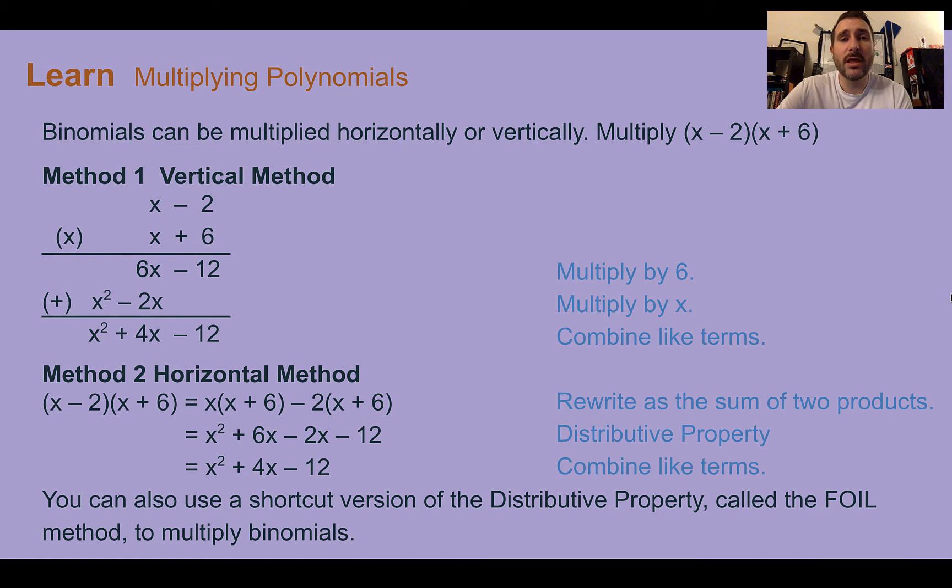Binomials can be multiplied in a few different ways. First, there is the vertical method. This particular method looks exactly like you probably learned multiplication in elementary school. You're going to line up the two things. Notice I have it lined up like terms. If I was missing a term, I would want to put in a placeholder to show that was missing, kind of like if I had the number 102, I would have to put the zero in the tens place.